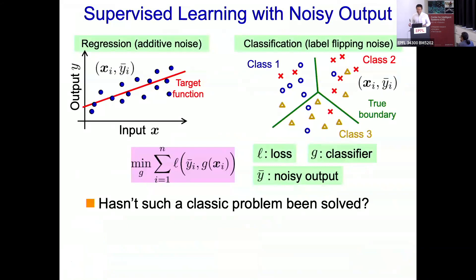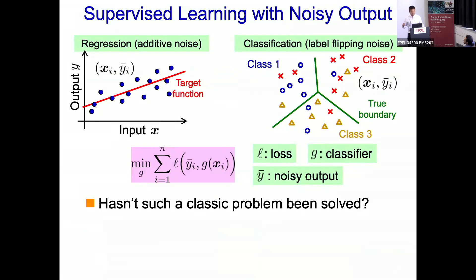Let's consider a very standard supervised learning problem with noisy output. In the case of regression on the left-hand side, we have input x and output y, and the output value is noisy — y bar. Usually we just perform least squares and fit our model g of x to y bar, and this works well in regression. But in the case of classification, the story is not that simple. Noise is basically label flipping, whereas in regression it's just additive noise.